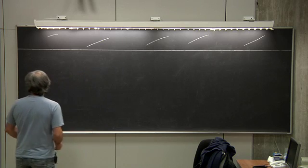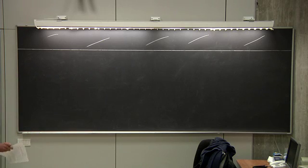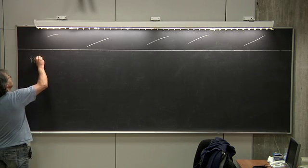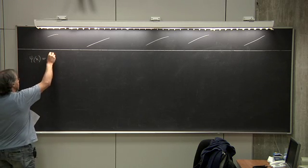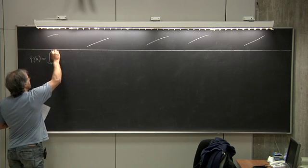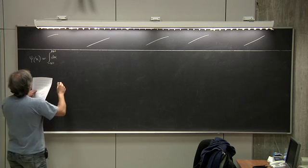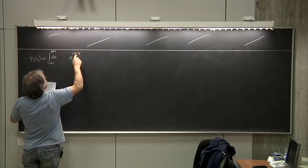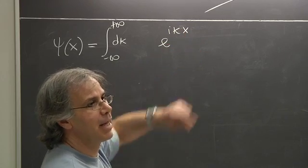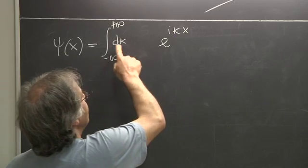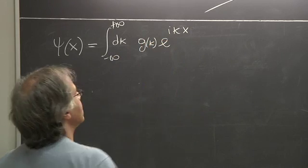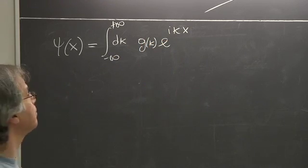So the goal is to describe wave packets. We look at an object psi of x being an integral in dk, where k is a one-dimensional variable, e to the ikx — k is the wave vector of this plane wave. This is cosine kx plus i sine kx. So you superimpose, you sum infinitely many plane waves, and you do it with this g of k, the weight function.